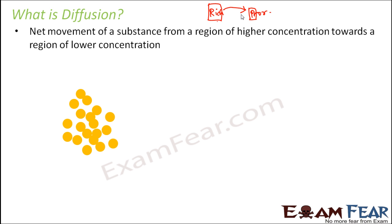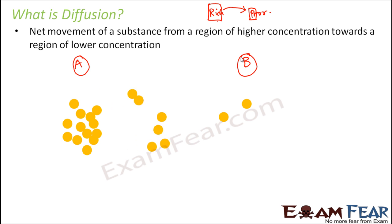Let's look at an example. Suppose these are some molecules — on which side is the concentration more, side A or side B? The number of molecules is more on side A, so the concentration is higher there. Diffusion means movement of these substances from side A to side B, and this movement continues until the concentration of molecules on both sides becomes equal.